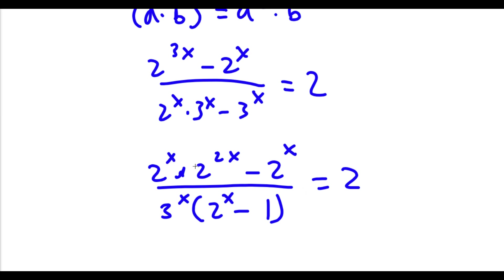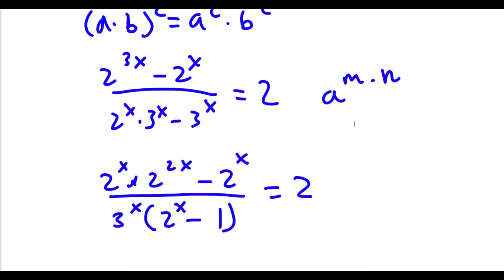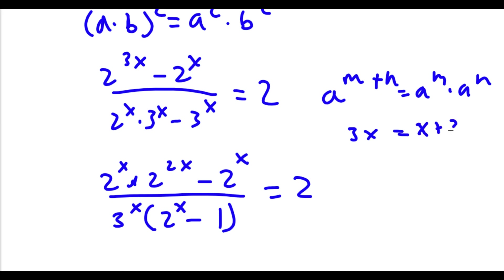The reason I wrote this as 2 to the power of x times 2 to the power of 2x is because if I have something in the form a to the power of m plus n, this is equal to a to the power of m times a to the power of n. So in this case, 3x was equal to x plus 2x, so I wrote this as 2 to the power of x times 2 to the power of 2x.